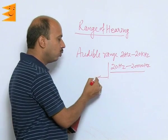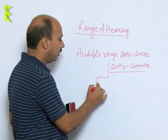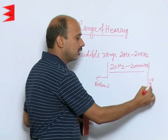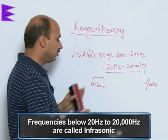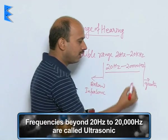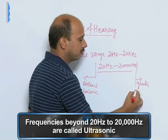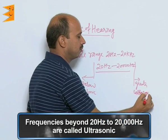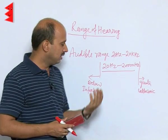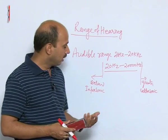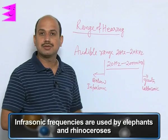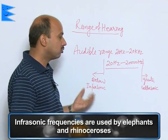Frequencies below 20 Hz we cannot hear, and beyond 20 kHz we also cannot hear. Frequencies below this are referred to as infrasonic, and beyond this are referred to as ultrasonic. Infrasonic frequencies are used by animals like elephants and rhinoceroses to communicate with each other.